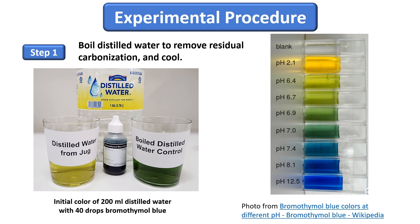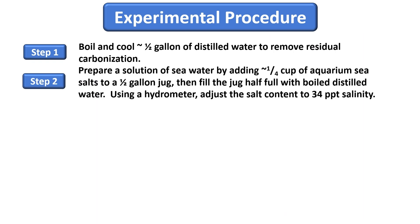Distilled water contains natural carbonation that renders it slightly acidic, with a pH in the range of 5.6 to 6.0. Boiling the distilled water removes this carbonation, turning its pH neutral or slightly basic. This degassed and cooled distilled water serves as a control in this experiment. The use of tap or bottled water is not recommended because of its varying mineral content. Simulated ocean water can be made easily by adding a quarter cup of aquarium sea salts, such as Instant Ocean, to a half-gallon jug half full of boiled distilled water. Using the hydrometer, adjust the salinity with more water or sea salt to reach about 34 parts per thousand.